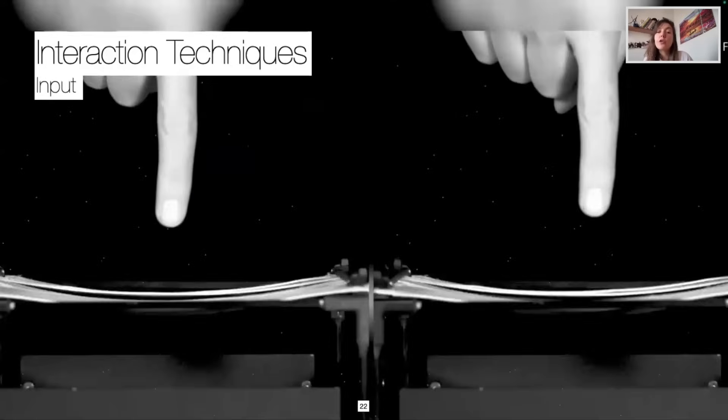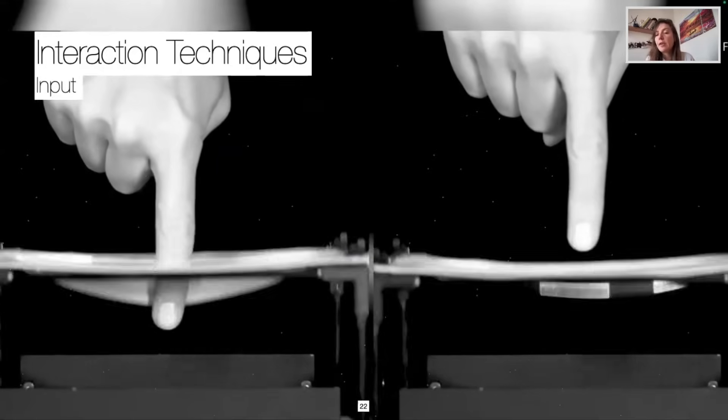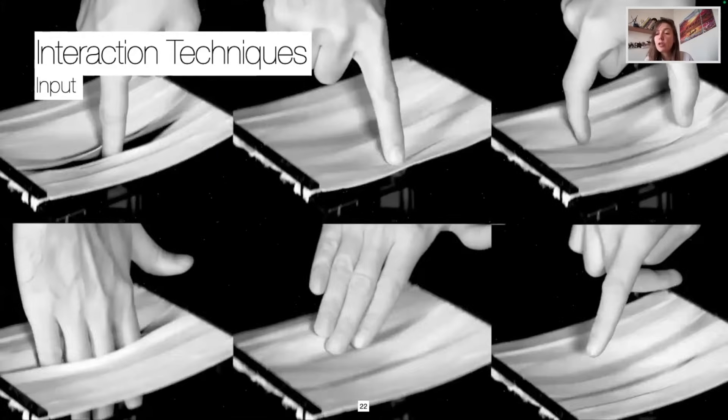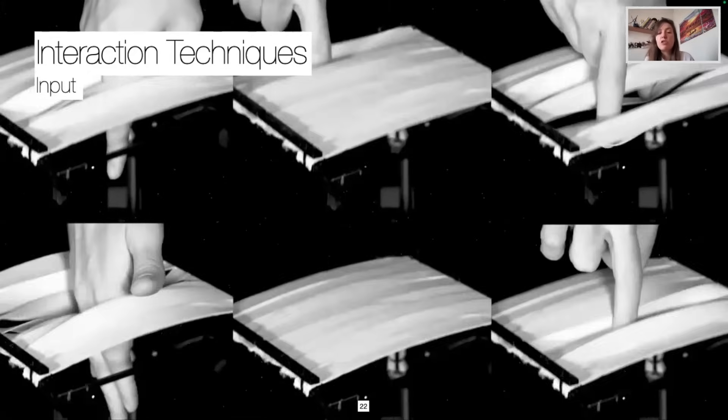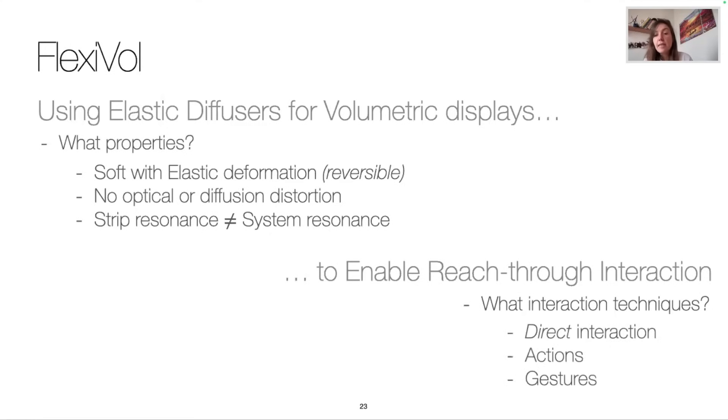Interaction can also occur with the strips or in the lateral, longitudinal, or diagonal direction without obstruction of fingers getting stuck between strips. We provided a non-exhaustive list of direct interaction using Flexible as a combination of gestures and actions.